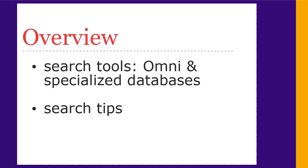This video will show you how to find scholarly articles on a topic. There are two different ways you can do this: using OMNI or a specialized subject database. We'll look at both, along with some tips for searching effectively.